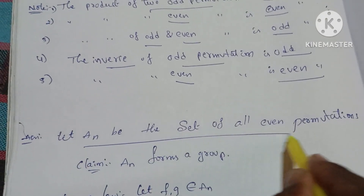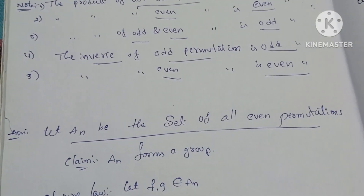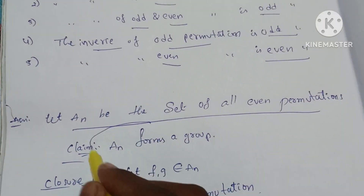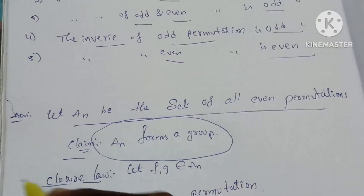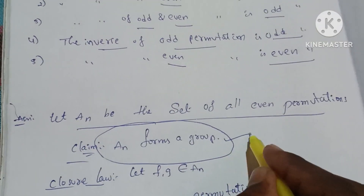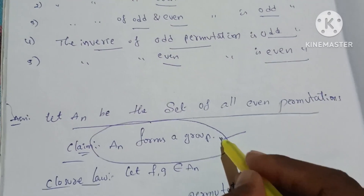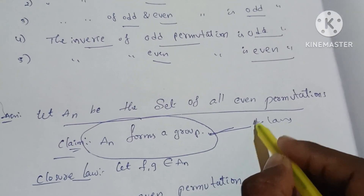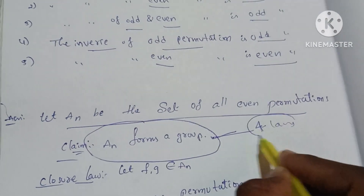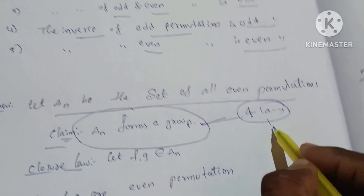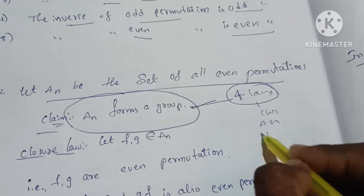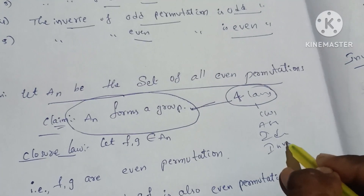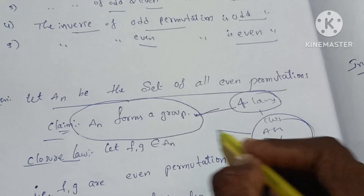Let Aₙ be the set of all even permutations. We will try to prove it is a group. To prove it is a group, we use the standard form with four axioms from the beginning of the chapter: closure, associativity, identity, and inverse.